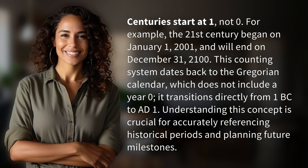This counting system dates back to the Gregorian calendar, which does not include a year 0 — it transitions directly from 1 B.C. to A.D. 1. Understanding this concept is crucial for accurately referencing historical periods and planning future milestones.